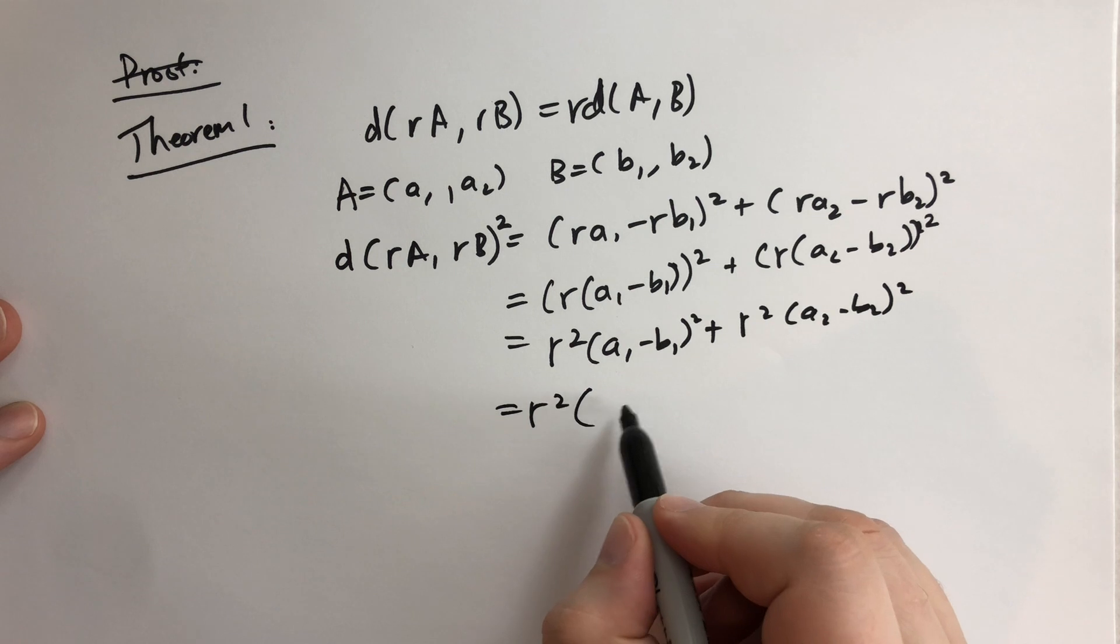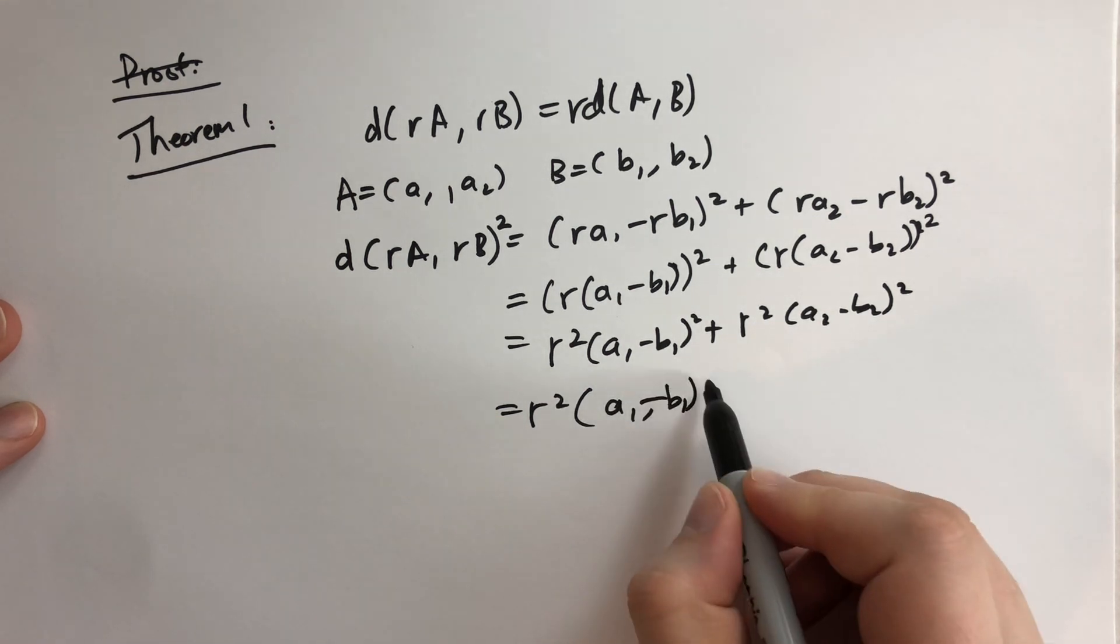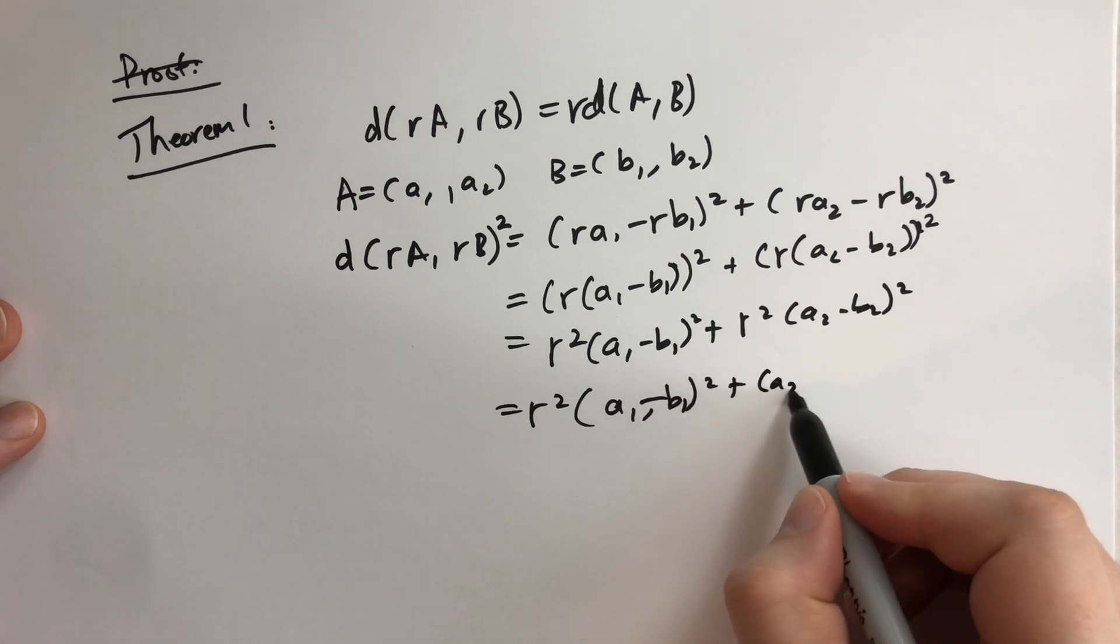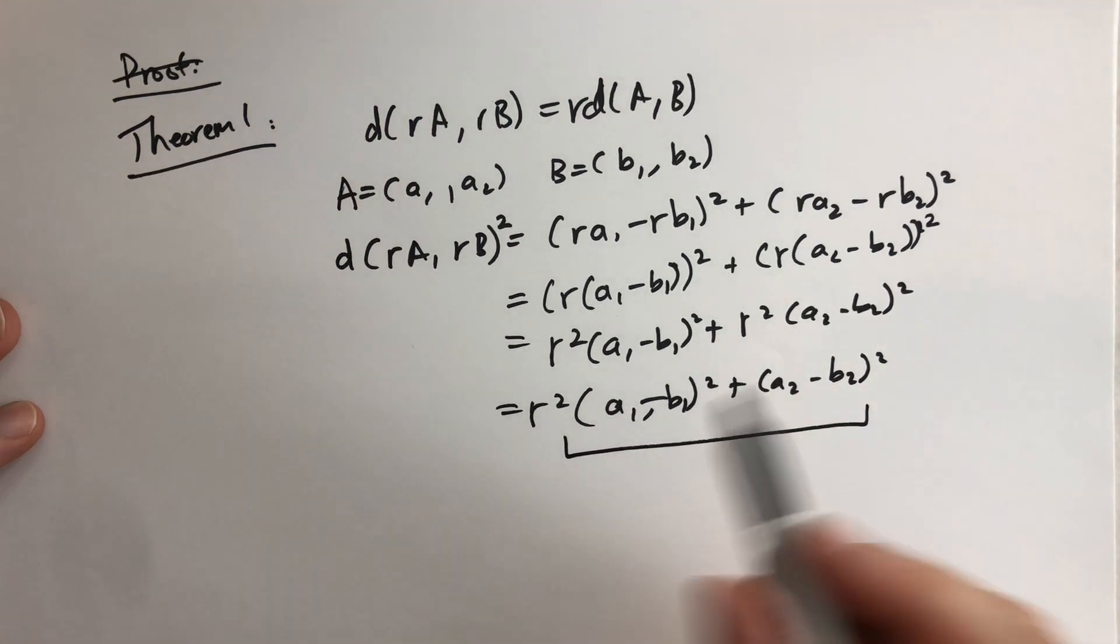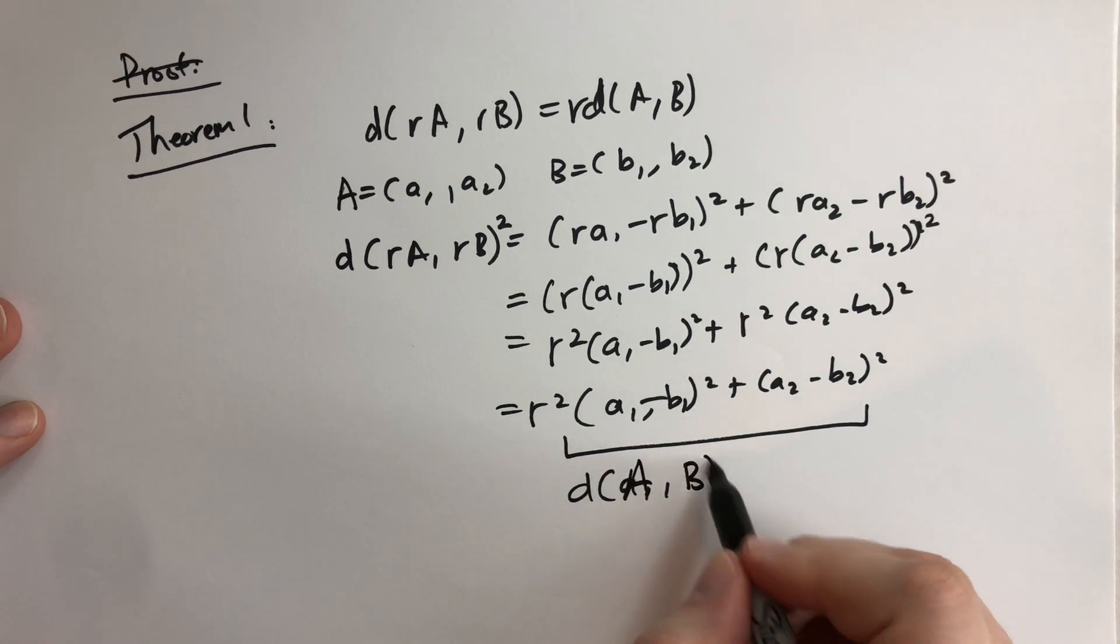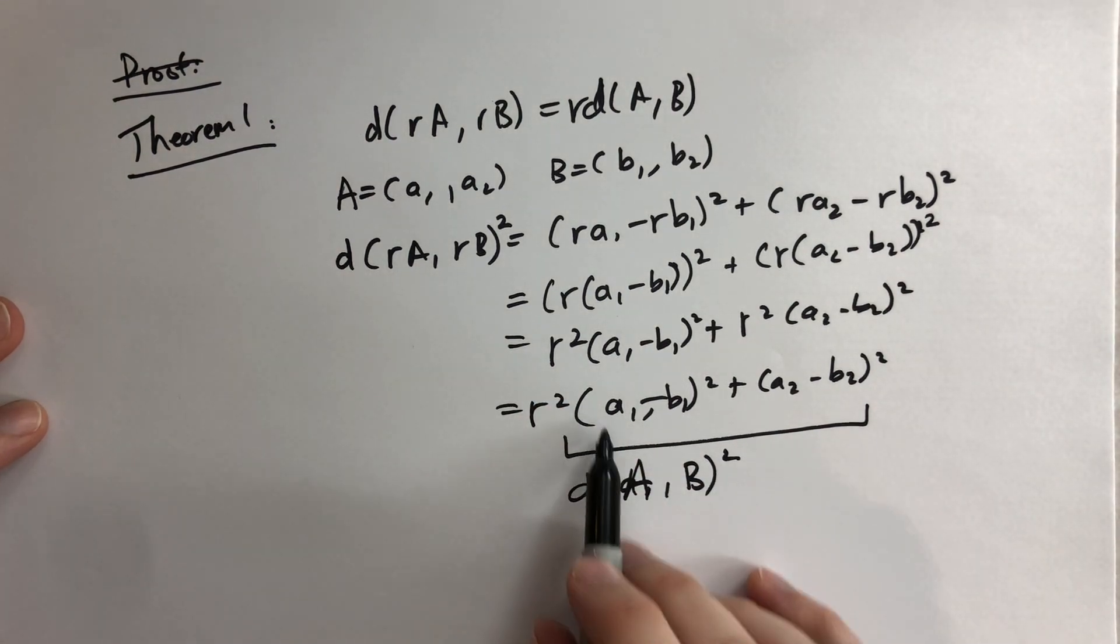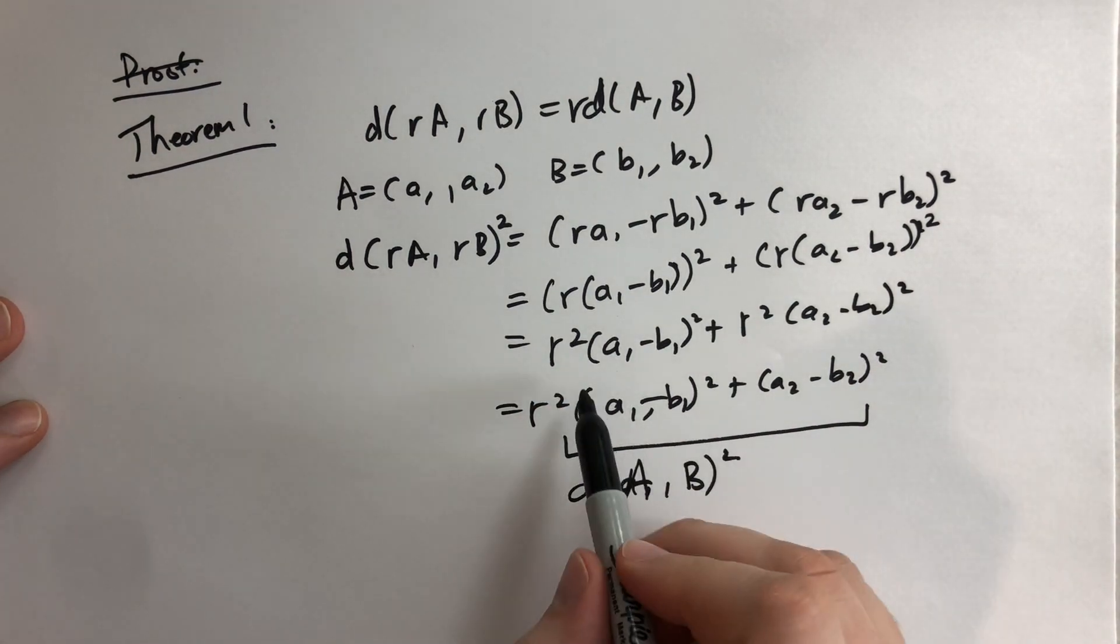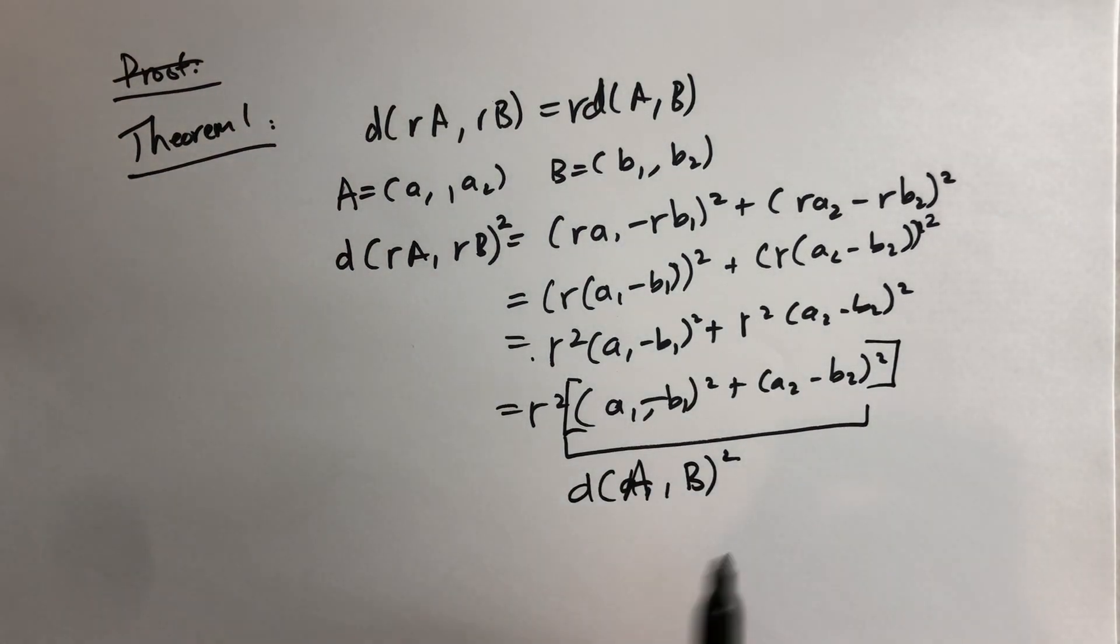And so we can factor out this R squared and we get A1 minus B1 squared plus A2 minus B2 squared. And this you should recognize as the distance from A1 to A. So the distance from A to B squared. So we have proven that the distance between these two is the same. This distance is equal to that right there. There's actually a block there because you're probably the R squared out from both terms. That is the proof. It's rather simple.